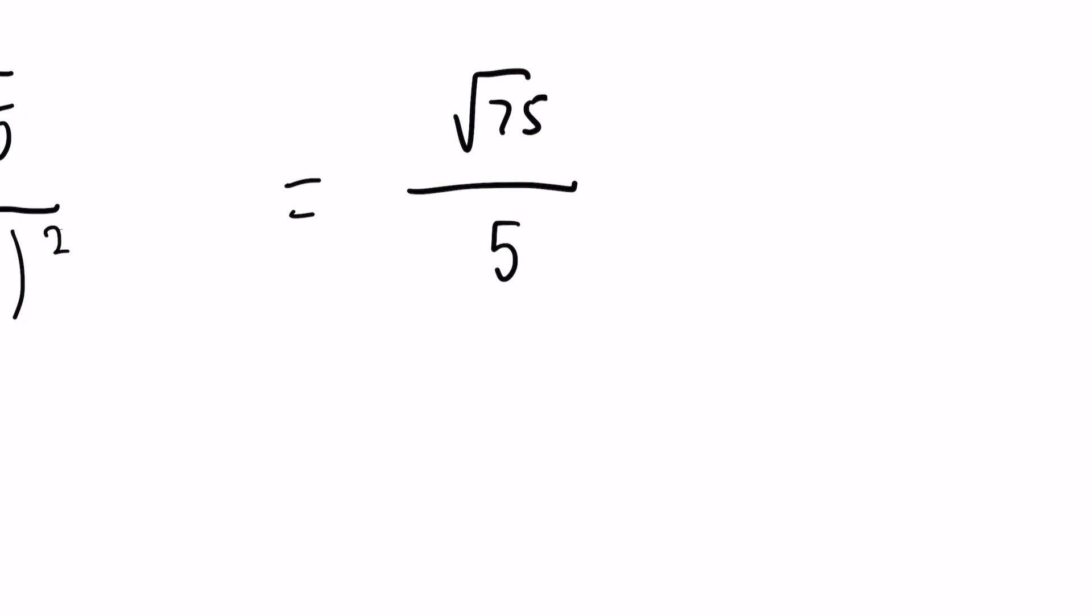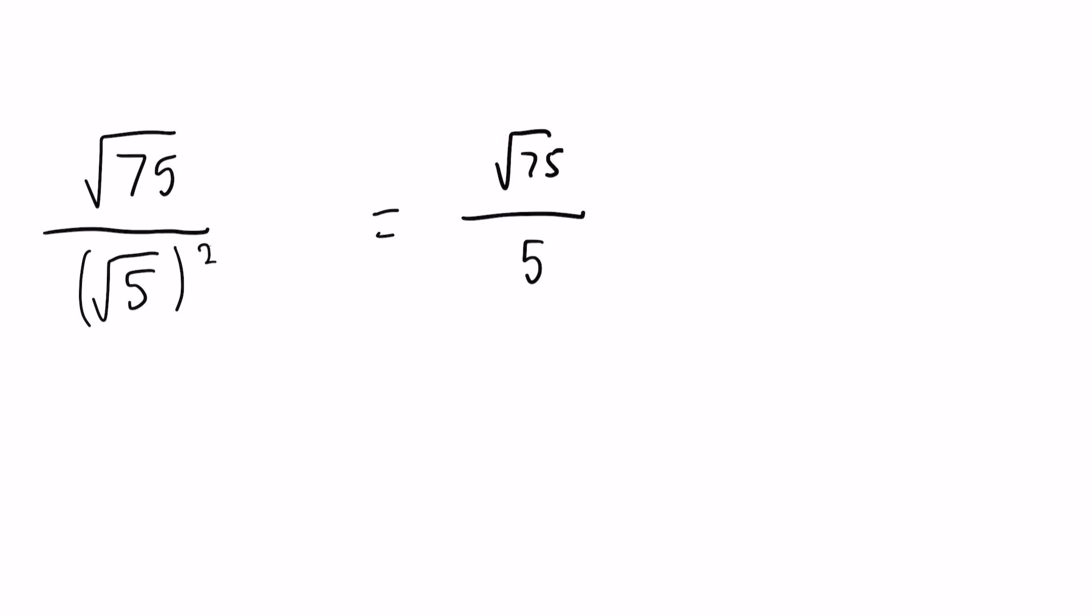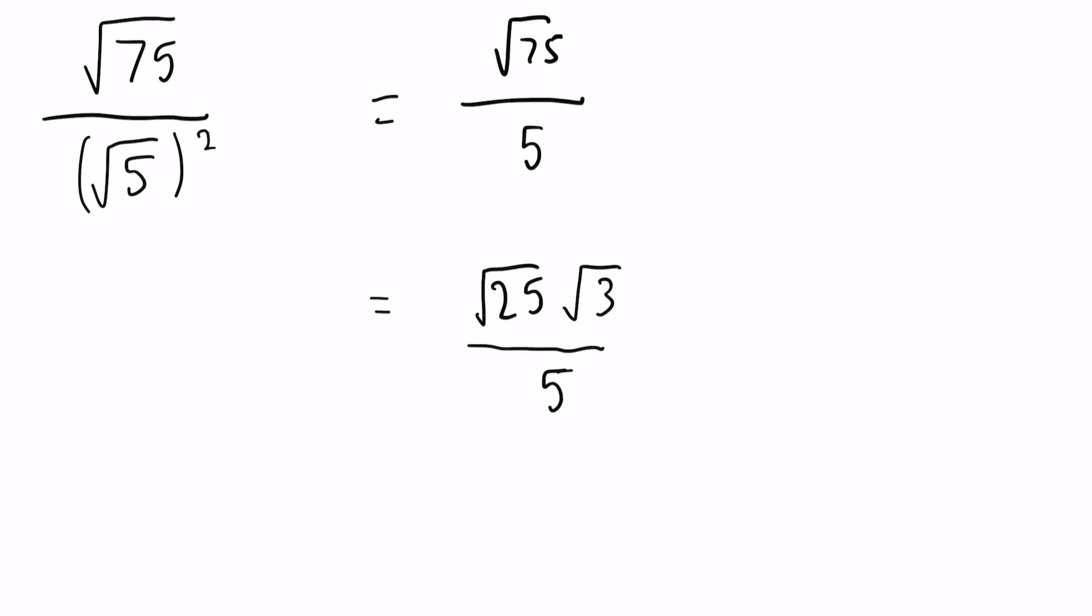Now again, just like with most things, we can always simplify it. So the square root of 75, again, we need to find the highest square number that goes into it. In this case, it would be 25. So we can say the square root of 25 and the square root of 3 because they times together to make 75. And divide that by 5 just like in the original.